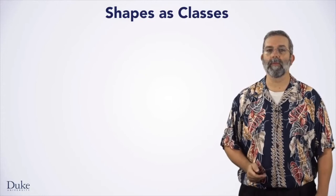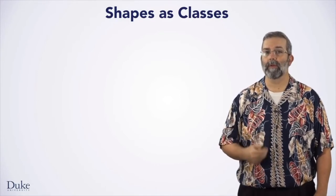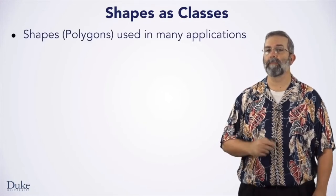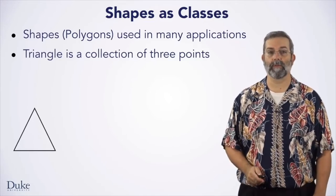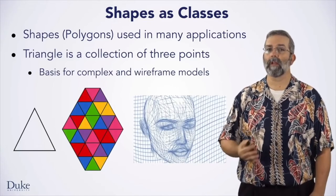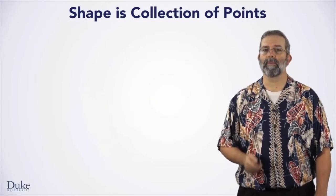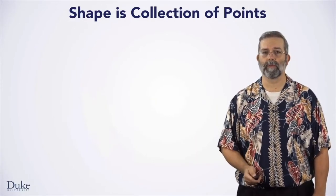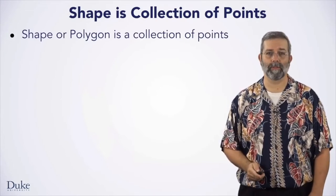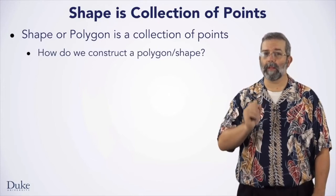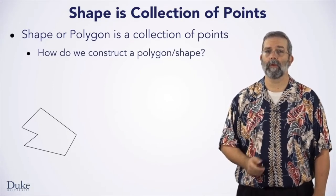Hello. We're going to learn how to calculate the perimeter of shapes using Java. We'll use what is called a Java class named Shape to model polygons in geometry. These kinds of shapes are used in many applications. For example, a triangle is the simplest polygon — it's simply a collection of three points. But triangles can be combined into complex shapes that are colorful or form the basis of wireframe diagrams used in computer graphics and video games.